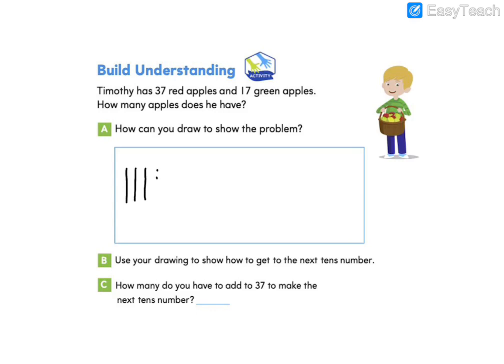So he has 37. So 3 tens and 7 ones of the red apples. And 17. 1 ten and 7 ones of the green apples.